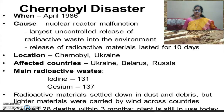Another industrial accident occurred in April 1986 in Chernobyl, causing a nuclear reactor malfunction. It was the largest uncontrolled release of radioactive waste into the environment, releasing radioactive materials for 10 days. The accident happened in Chernobyl, located in Ukraine, and the affected areas included Ukraine, Belarus, and Russia. The main radioactive wastes were iodine-131 and caesium-137. While heavier materials settled in dust and debris, lighter materials were carried by wind across countries, causing 28 deaths within three months.